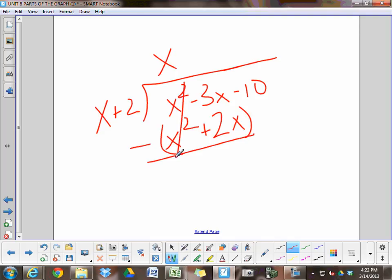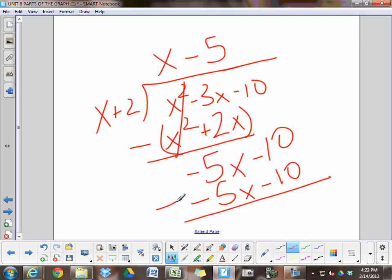Cancel. Negative 3x minus 2x is negative 5x. Bring down the negative 10. What times x makes negative 5x? Negative 5. Negative 5 times x is negative 5x. Negative 5 times 2 is negative 10. And when you put a line and subtract this whole thing, there's no remainder.